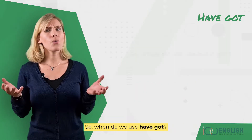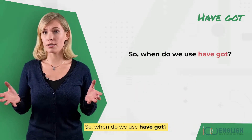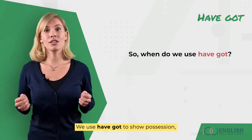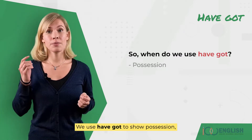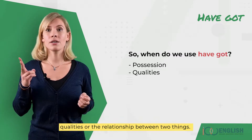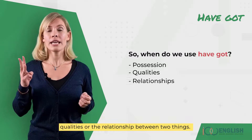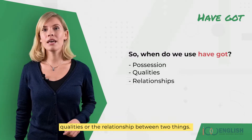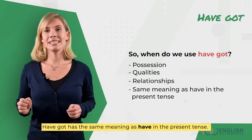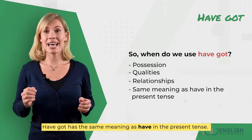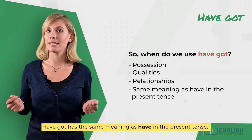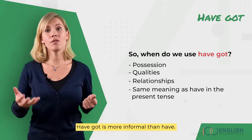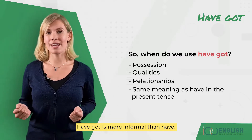So when do we use have got? We use have got to show possession, qualities, or the relationship between two things. Have got has the same meaning as have in the present tense. Have got is more informal than have.